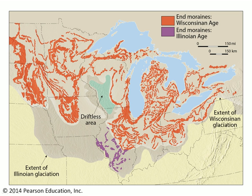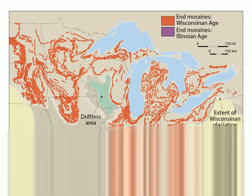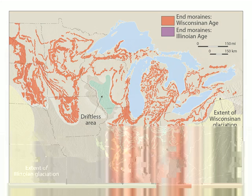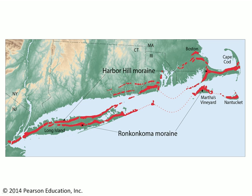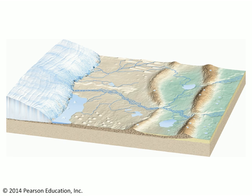So the Great Lakes were carved out, in fact, by glaciers — lobes of that great continental ice sheet. The end moraines can also be found in the east. You can see some over here on the shores of New York and New England.